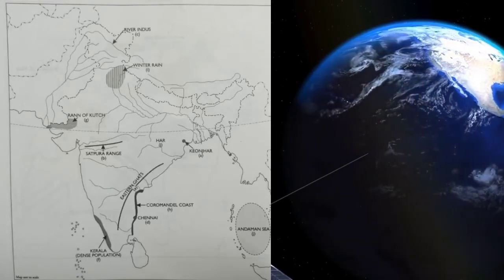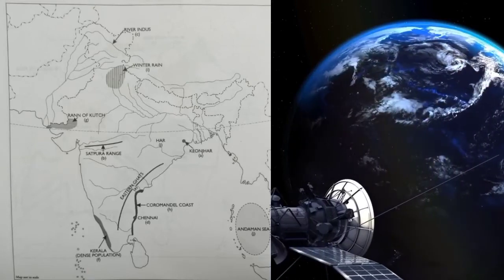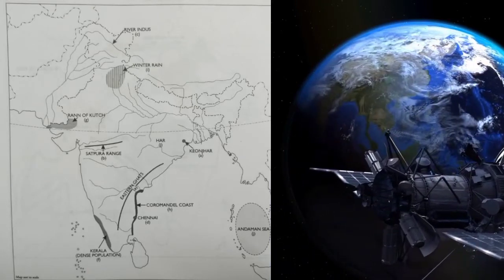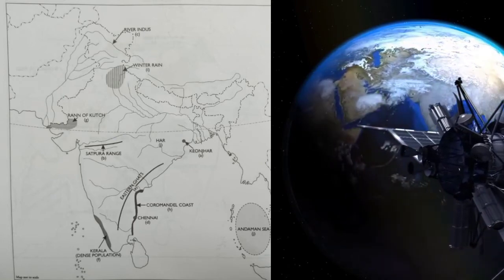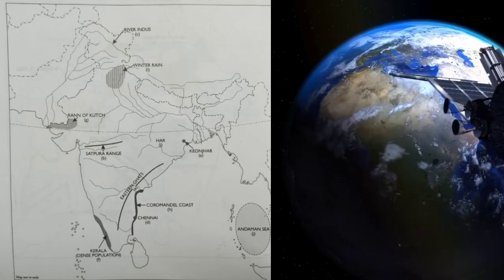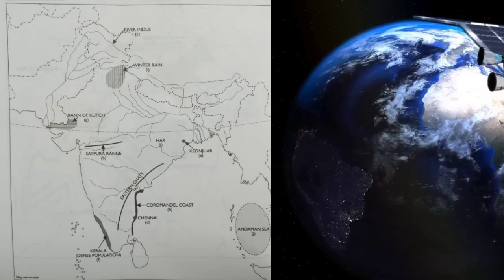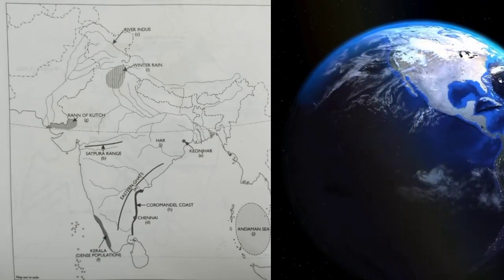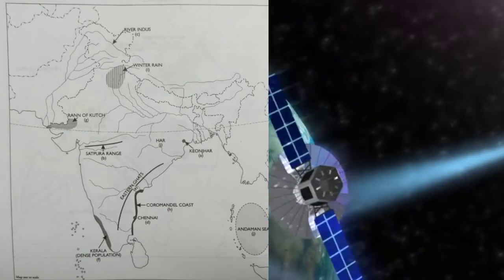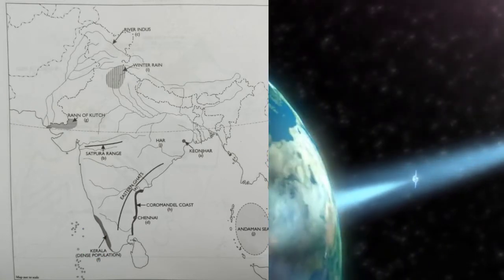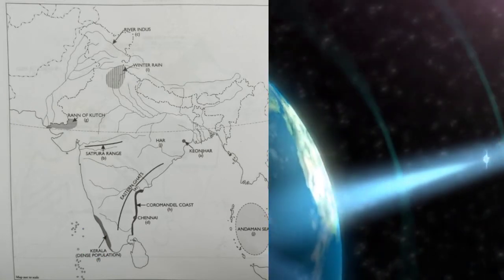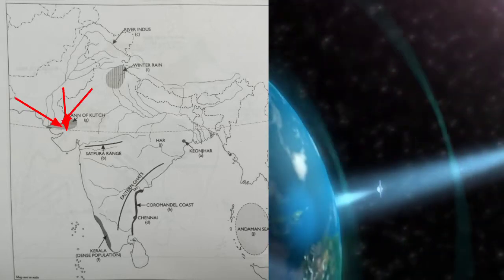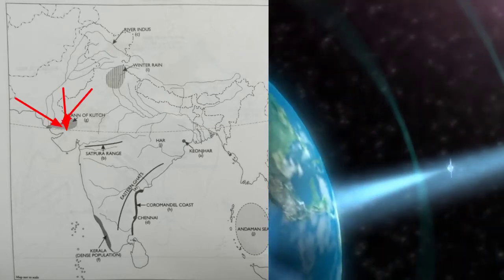Mark and name the Eastern Ghats in this area. Mark and name the region of dense population in Peninsular India — 'F' — Peninsular dense population. Mark and name the Rann of Kutch. Mark and name the Coromandel Coast.